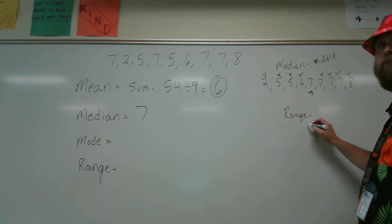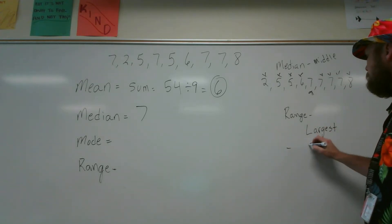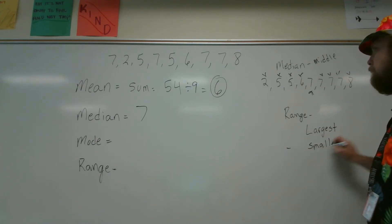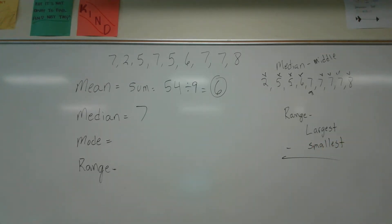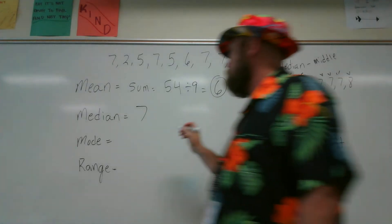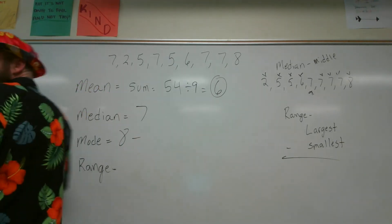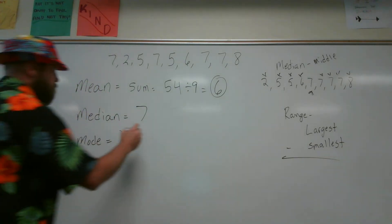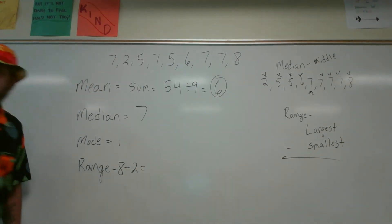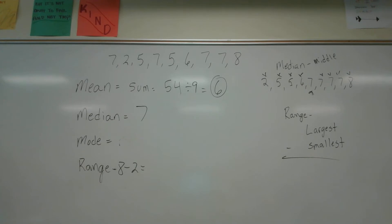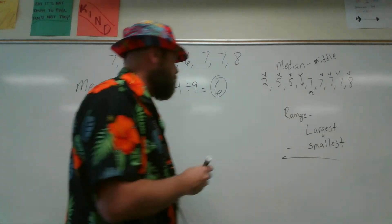Finding the difference between the largest value and smallest value of range. Good. Largest subtract smallest. And what is our largest on our list? Eight. And our smallest? Two. And what is our range? Eight subtract two. Six. Our range is six.